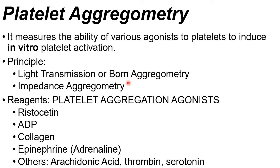In recent instrumentation, electrical impedance aggregometry is now commonly used, as it is also used for cell counts. Your reagents for this procedure are collectively known as platelet aggregation agonists — meaning initiators or activators.